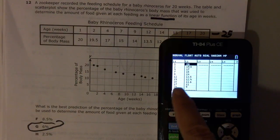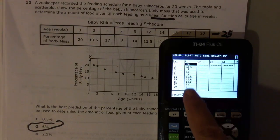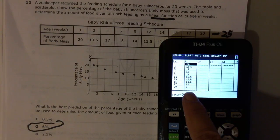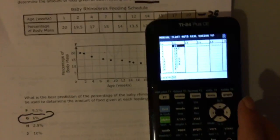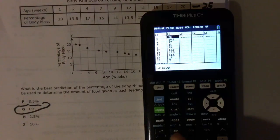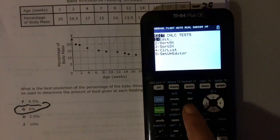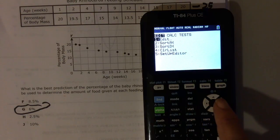You're going to type in your age for your X and your Y is your percentage of body mass. So you type that in and make sure it's exact. And then what you do is you go back to STAT and to calculate.